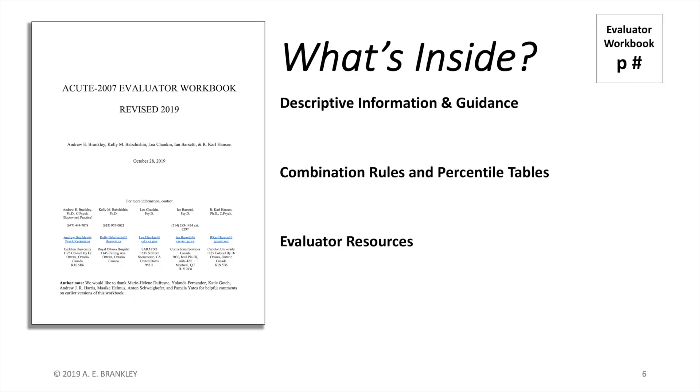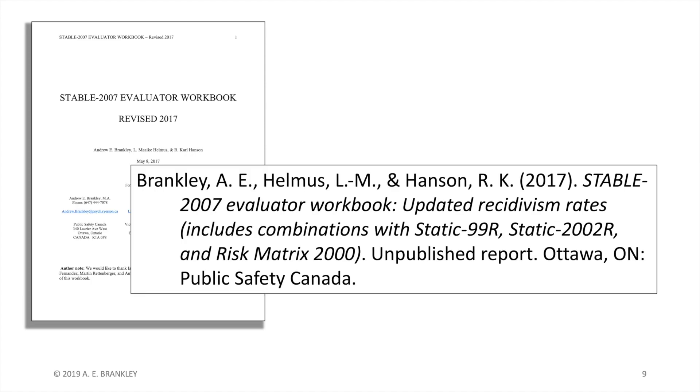The Evaluator Workbook and this video is divided into three sections. If you watch to the end of the video, I will show you an Easter egg I hid in the workbook. Let's begin with the first section. This includes an overview of the workbook, the development of acute, and the normative data. For stable 2007 users, the latter part should be familiar. It is the same normative data described in the 2017 stable 2007 Evaluator Workbook.